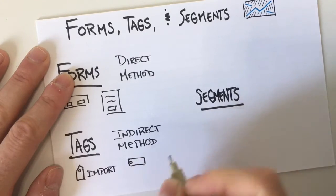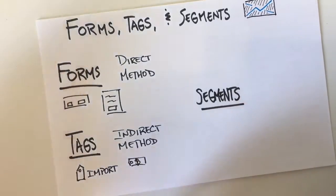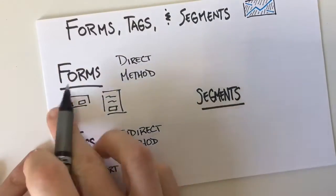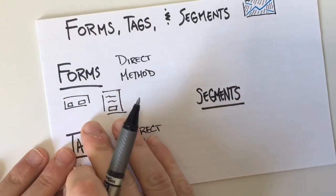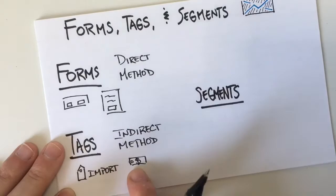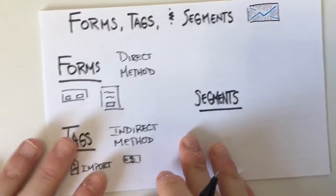So that's how I think about forms and tags. It is the difference between a direct explicit method of subscription and then more of an indirect method. So maybe it's an imported tag or maybe they purchased something through an integration.